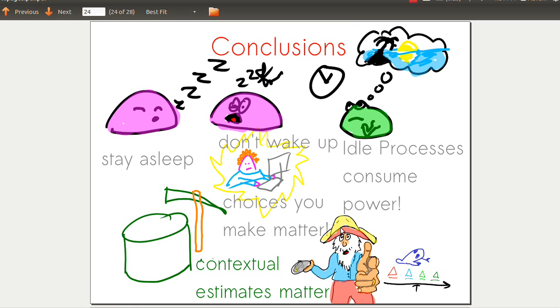In conclusion, your software should stay asleep - don't wake it up. We want to make sure idle processes don't consume power, because they do. Ultimately, the choices you make as a user affect the battery life of your software. Contextual estimates matter - developers want to seek contextual estimates and don't want to run regression tests. Thanks, bye.